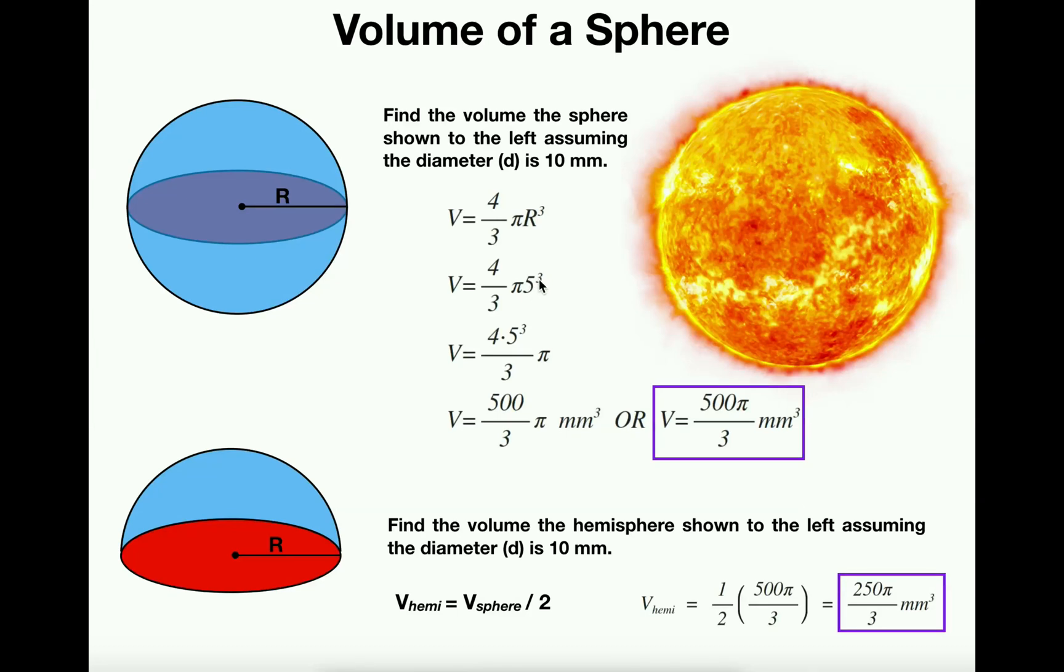We can pull the 5 cubed up here and get the volume is 4 times 5 cubed over 3 times pi. 5 cubed is 5 times 5 times 5, which is actually 125.